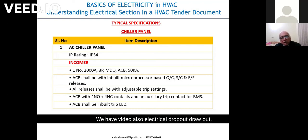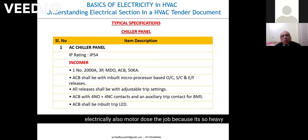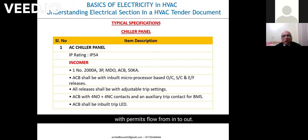We have EDO also — Electrically Draw Out, D-R-A-W-O-U-T. Draw means pull. Electrically also, a motor does the job because the switch is so heavy and it is not easy to push and pull. ACB means Air Circuit Breaker. Breakers means the contact — the contact which permits the current to flow in to out.